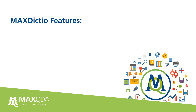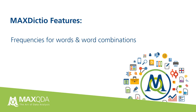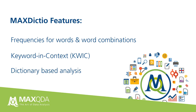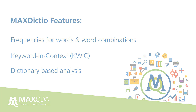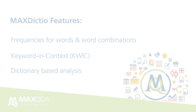MaxDictio offers three main tools: analysis of word frequencies and word combinations; analysis of a keyword in context; and quantitative content analysis with a dictionary. In this short video we'll get to know these features by snooping around the Sherlock Holmes stories in regard to gender descriptions.